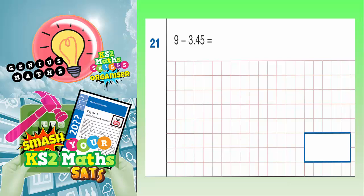Question 21. 9 subtract 3.45. Well, what we could do here is we could do it in our heads.